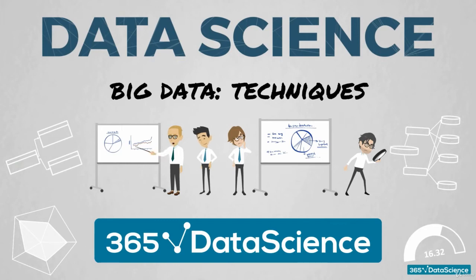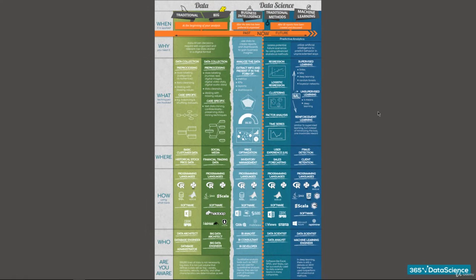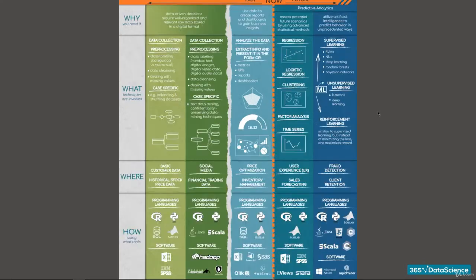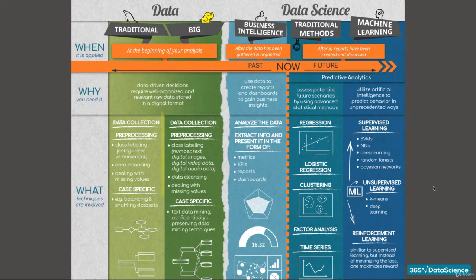While they definitely have their differences, some of the approaches used on traditional data can also be implemented on big data. Collecting and pre-processing big data is essential to help organize the data before doing analyses or making predictions, as is grouping the data into classes or categories.